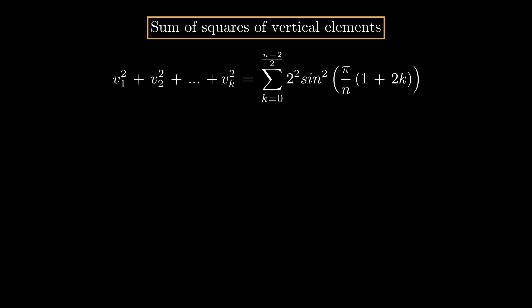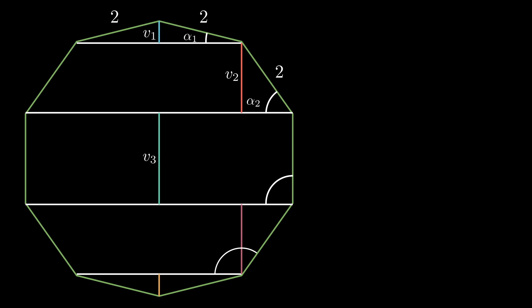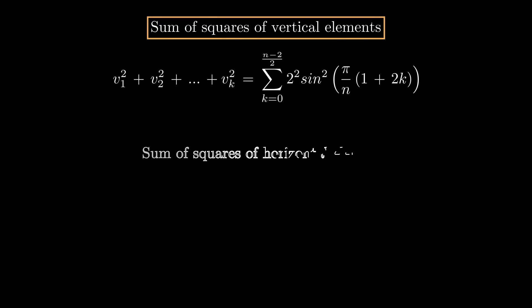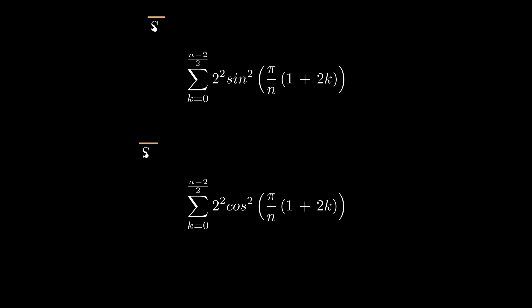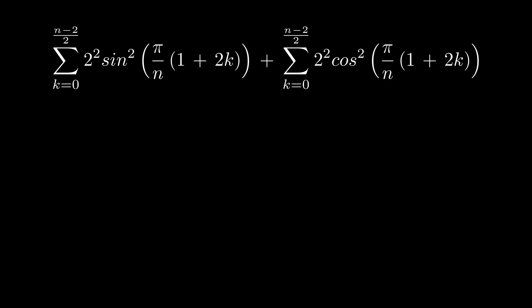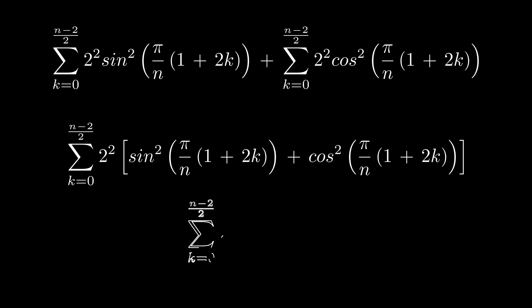To succeed, we need to observe. Observe that we can as well consider horizontal lines of our triangles. They relate to cosines of the same angles. Let's sum the two series together. Sine squared plus cosine squared is 1. Hence, the sum simplifies and yields 2n.